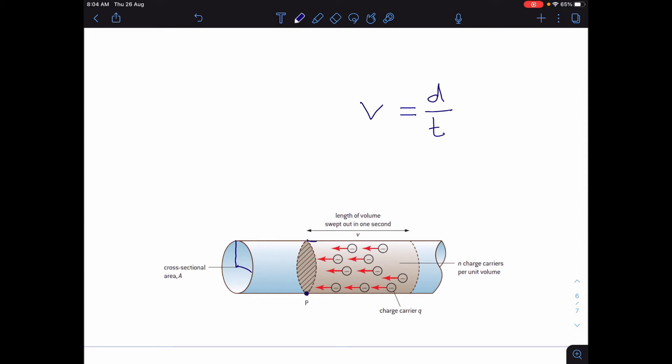...a length of cylinder, if you imagine like a cylinder of electrons, the length of the cylinder is V, their speed, in one second.